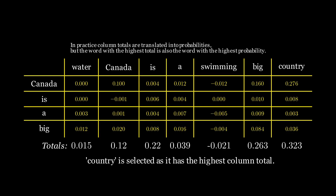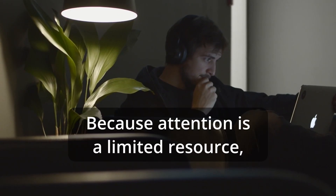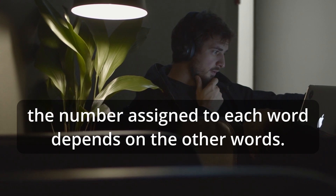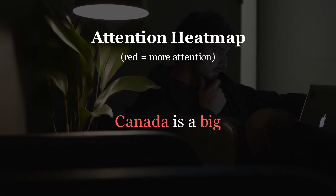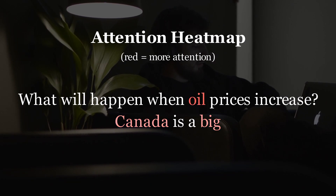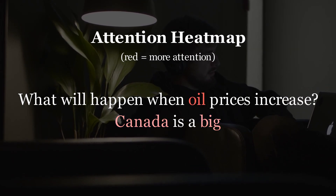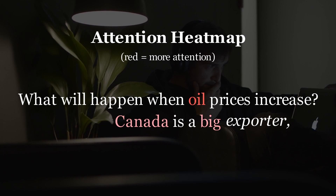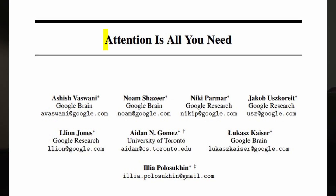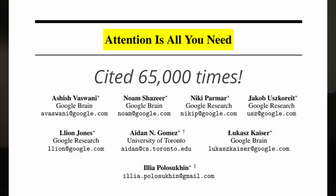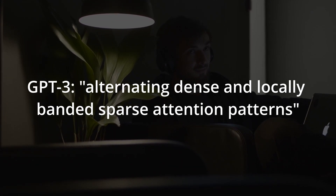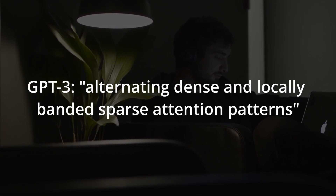Words that ChatGPT pays less attention to will receive less weight when deciding which word comes next. Because attention is a limited resource, the number assigned to each word depends on the other words in the text. For example, if additional words were added, there'd be less attention on Canada and Big, so ChatGPT might select 'exporter' as the next word instead of 'country.' This attention mechanism was responsible for many breakthroughs in AI — indeed, improvements in attention were a big source of progress from GPT-1 to GPT-2 and then GPT-3.